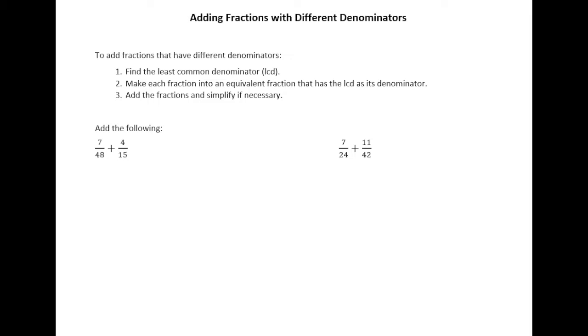So, let's start with 7/48 plus 4/15. First of all, when I look at 48 and 15, it's not obvious to me what the least common multiple of those is. And so, because of that and the fact that 48 and 15 are, at least 48 is a larger number, I would suggest using the prime factoring method here. We worked on this a lot in section 3.1 with the least common multiple. And we've seen it a few other times as well.